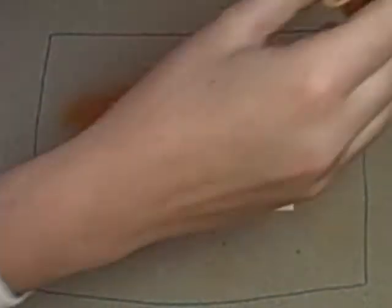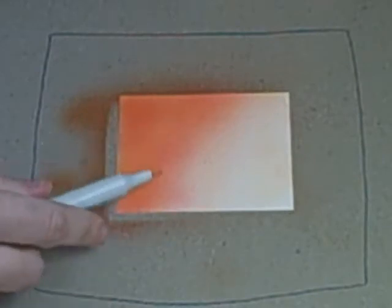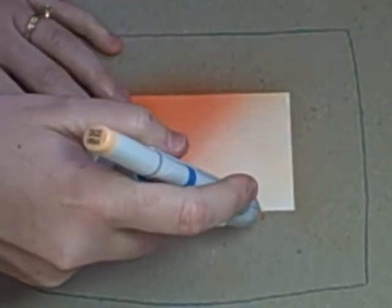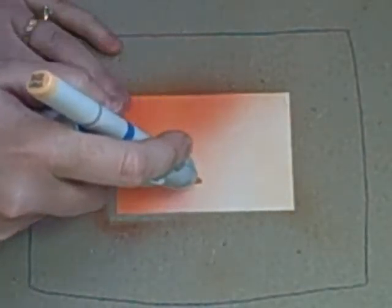Now I'll go back with my lightest marker and touch up the top half, blending that line a little bit where you see a strong line between the dark and the light, working my way down.